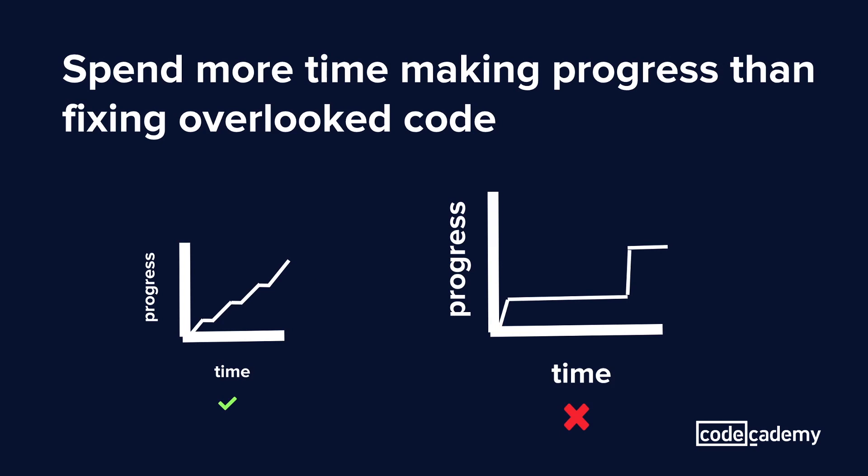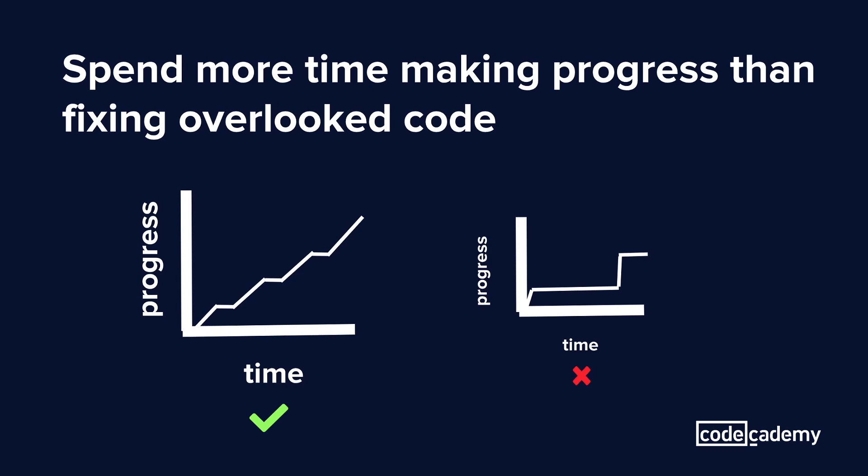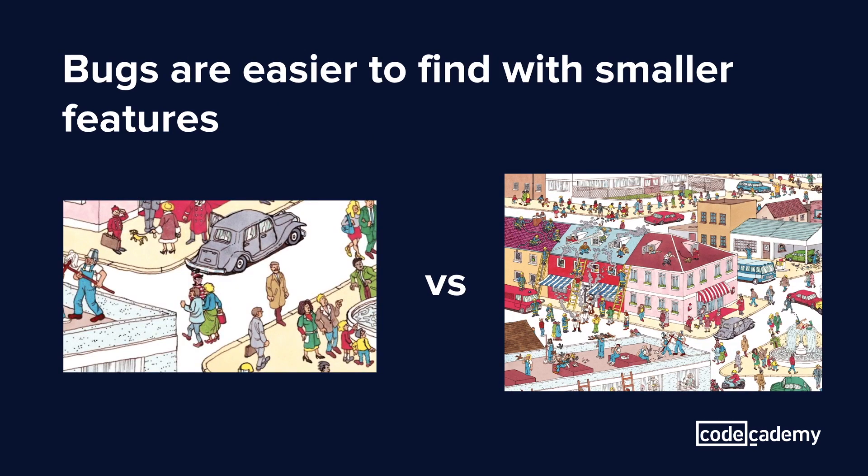On the right, you can see that when you push out really large features in one go, there's a lot of time being spent with little progress being made. This is because you spend more time going through more code to debug and test than if you were to make smaller changes. So when you limit the size and quantity of the features going out, like in the graph on the left, bugs are a lot easier to catch. You can isolate the issue more easily when there's less code to go through. It's like when you're playing Where's Waldo, with Waldo being your bug and the rest of the picture being your code. It's a lot easier to play when the picture is smaller.